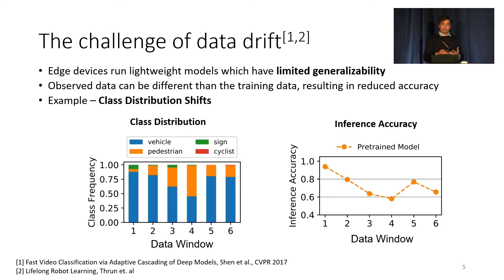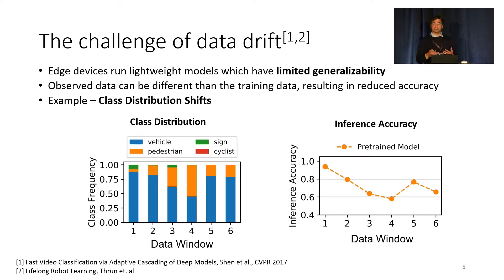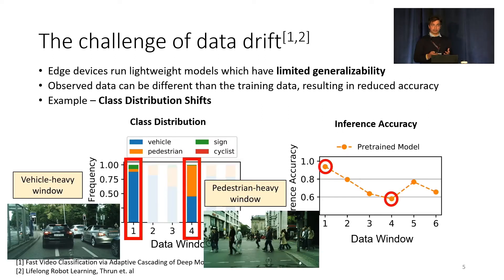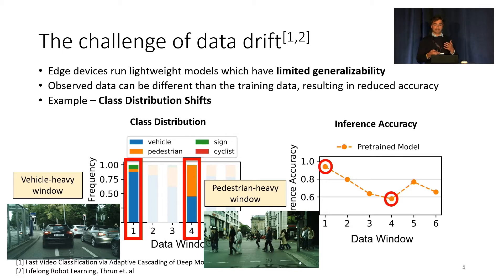One example of data drift is shift in class distributions. As you can see here on the left, I plot the class distribution across six data windows — you can think of each data window as one segment of video. On the right, I plot the inference accuracy of a model trained on window one. Window one was a vehicle-heavy class distribution, so the model achieves higher accuracy operating on window one. But when the incoming data distribution becomes pedestrian-heavy, the accuracy of the model drops, as you can see in data window four.